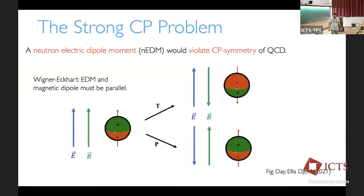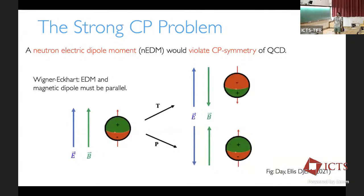The QCD axion idea starts with the strong CP problem, which begins with thinking about giving an electric dipole moment to the neutron. If the neutron were to have an electric dipole moment, this would violate CP symmetry of quantum chromodynamics. The Wigner-Eckart theorem tells us there's only one vector in the rest frame of a neutron, so the magnetic dipole moment must be parallel to its electric dipole moment. Under transformations like T and P, the electric and magnetic fields get swapped, and the dipole changes differently. CPT has to be a symmetry, so overall this violates CP.